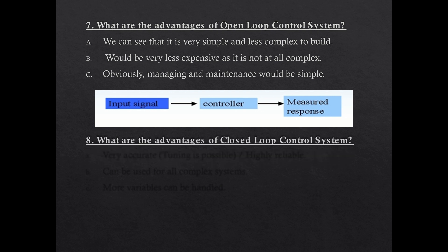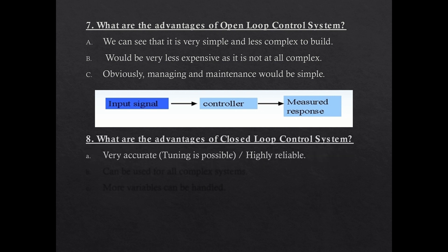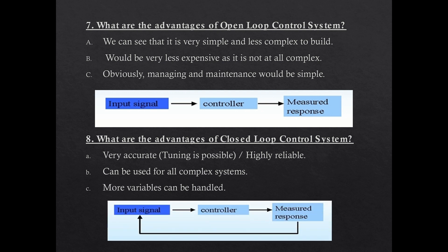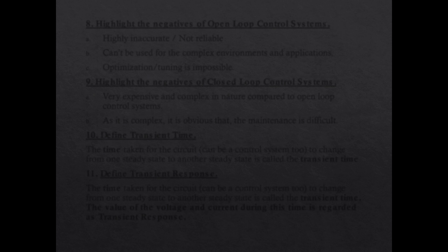What are the advantages of a closed loop control system? It is very accurate, tuning and real-time tuning are possible, it is highly reliable, and it can be used for complex systems. Many variables can be handled because you have the facility to feed output back as input. It is much better in terms of accuracy and reliability. Whenever you want high reliability and high accuracy, you should choose the closed loop control system. But again, it is not easy to work with.